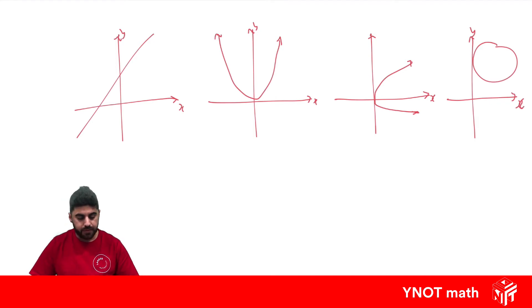Now, if we have a function, when we draw a vertical line through that function, it can only cut it once. If we can draw a vertical line that cuts it more than once, it's not a function.